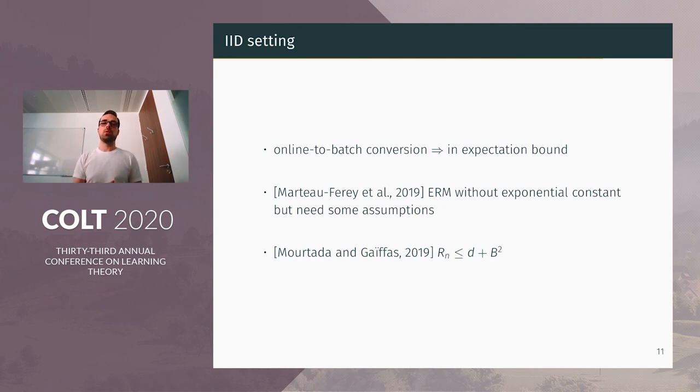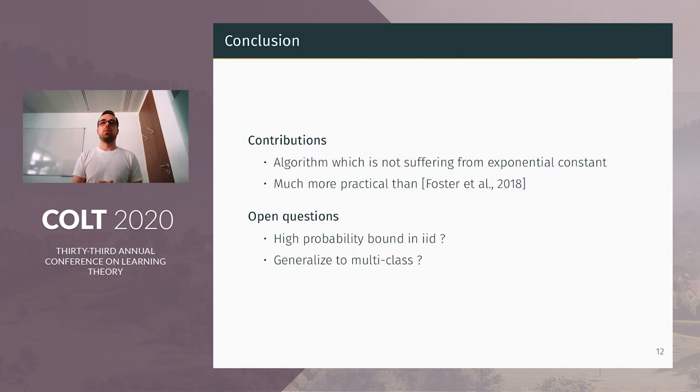There is also a recent work, which has also an improper algorithm. And they show that the regret is bounded by D plus B². So it's a bound close to ours. Of course, there is no logarithmic dependence in N, because it's a batch setting. But they have a polynomial dependence in B. So to conclude, in this paper, we introduced a new algorithm, which achieves logarithmic regret.